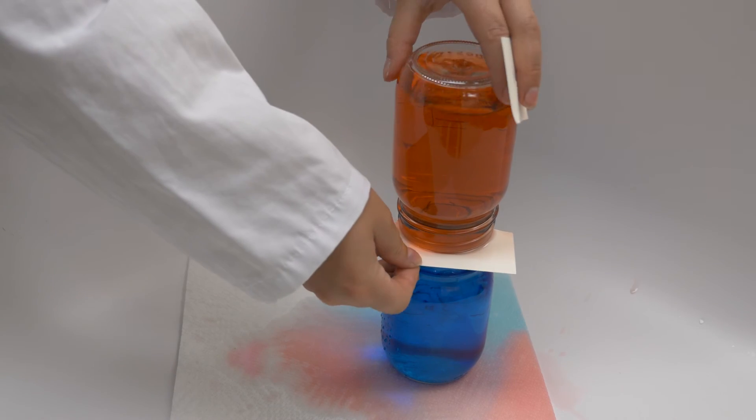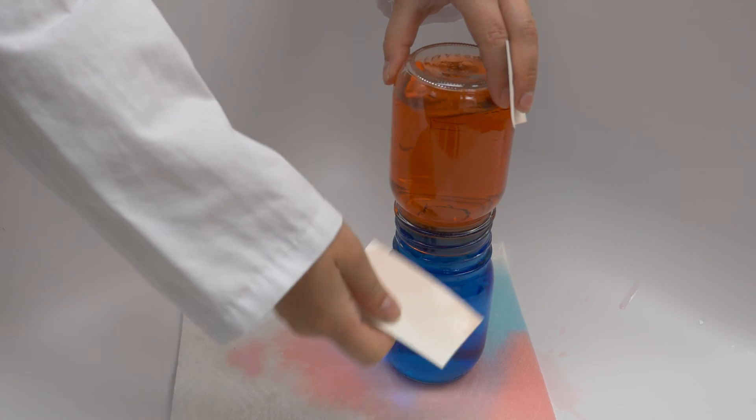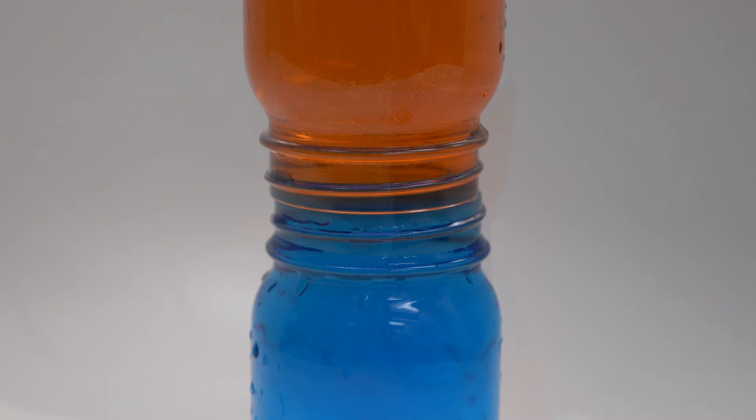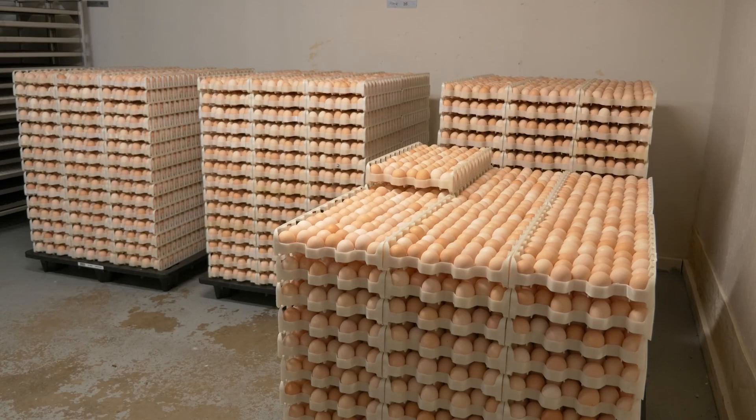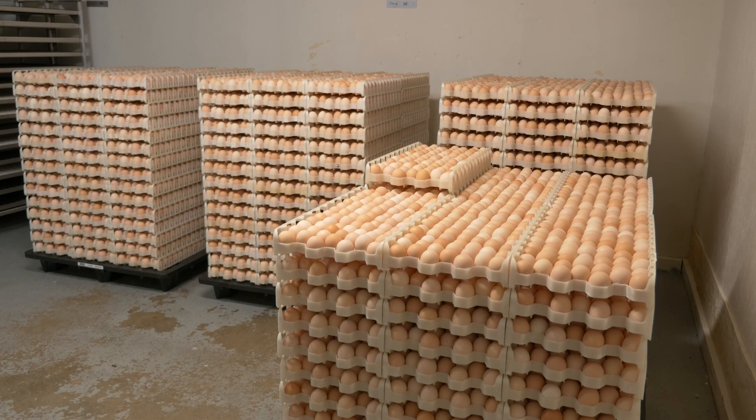The same thing happens to eggs that are warmer than the water they are placed in. To reduce the chance of accidentally contaminating your hatching eggs, make sure you never soak them, and make sure wash water is at least 41 degrees Celsius.